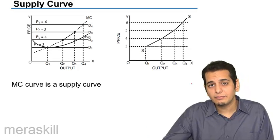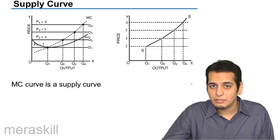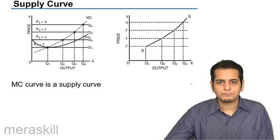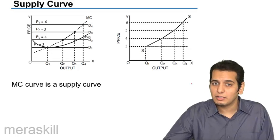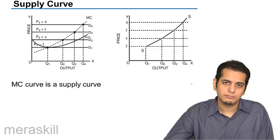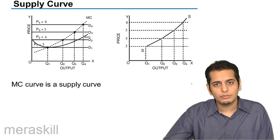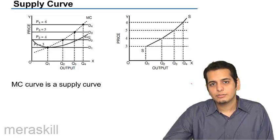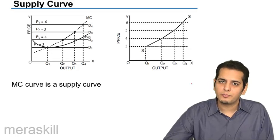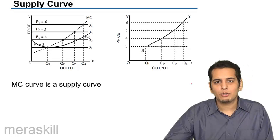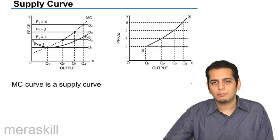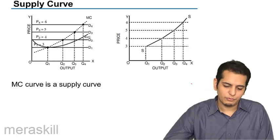We have derived the demand curve for the firm. The demand for the firm is the same as the price, so the price curve is the demand curve. Now let's see what is the supply curve for the firm.